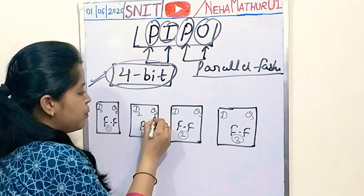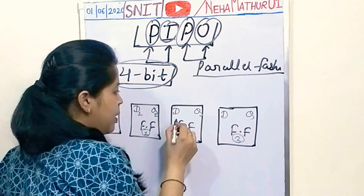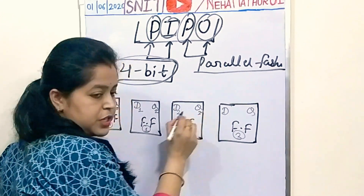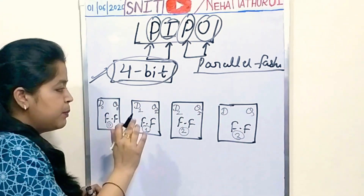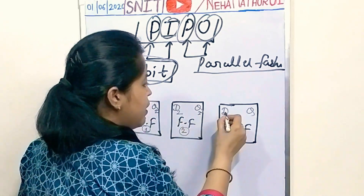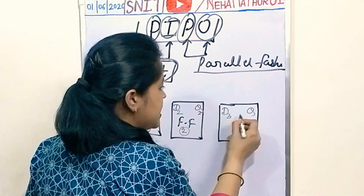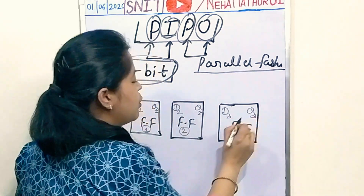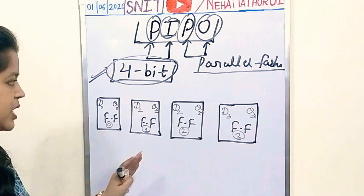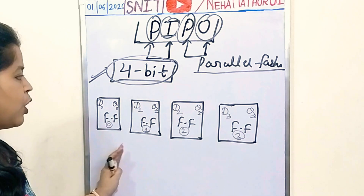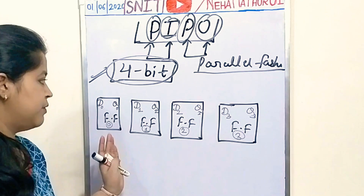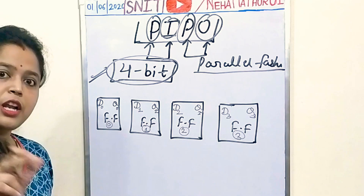For flip-flop 0, the input will be D0 and output is Q0. Similarly for flip-flop 1, input will be D1 and output is Q1. For flip-flop 2, input is D2 and output is Q2. And for flip-flop 3, input is D3 and output is Q3. This is just the combination of flip-flops which are actually not yet connected.